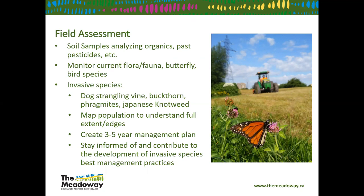Field assessments before you start any meadow project: focus on existing soil conditions, determine what you're monitoring — we're currently doing butterflies, birds, flora, and fauna, and hoping to get into bees. Assess your invasive species baseline — we have dog-strangling vine, buckthorn, phragmites, Japanese knotweed, and Canada thistle, which can be very aggressive in the first couple of years and push out the meadow. Map your edges and map where each species can be found.